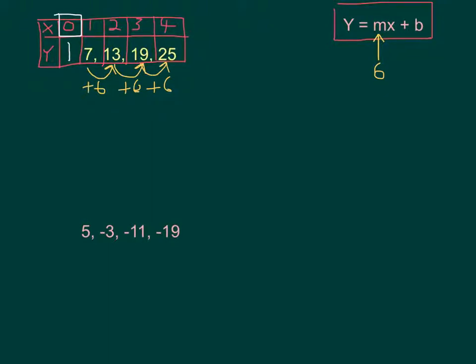So in this case, my b value is 1. And now I can write my formula as y equals 6x plus 1.